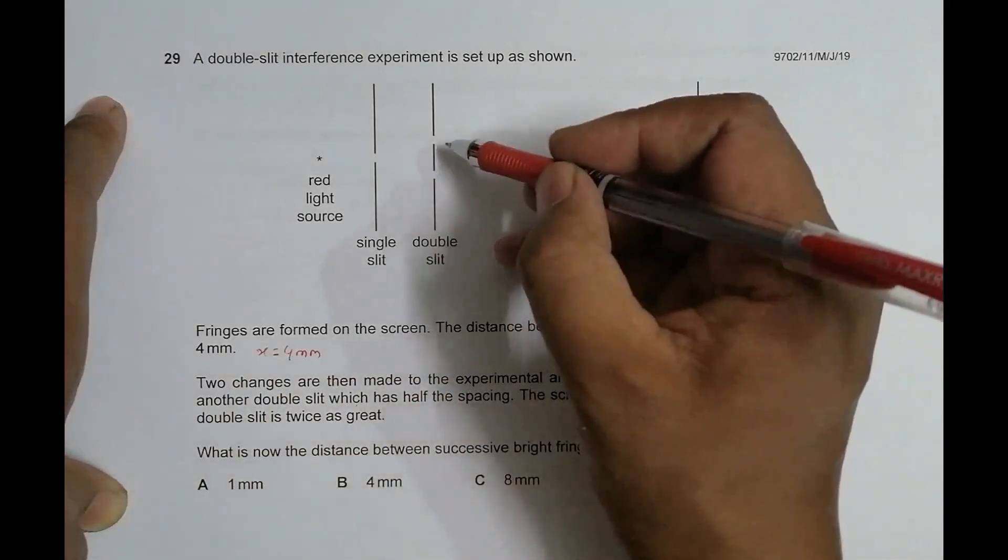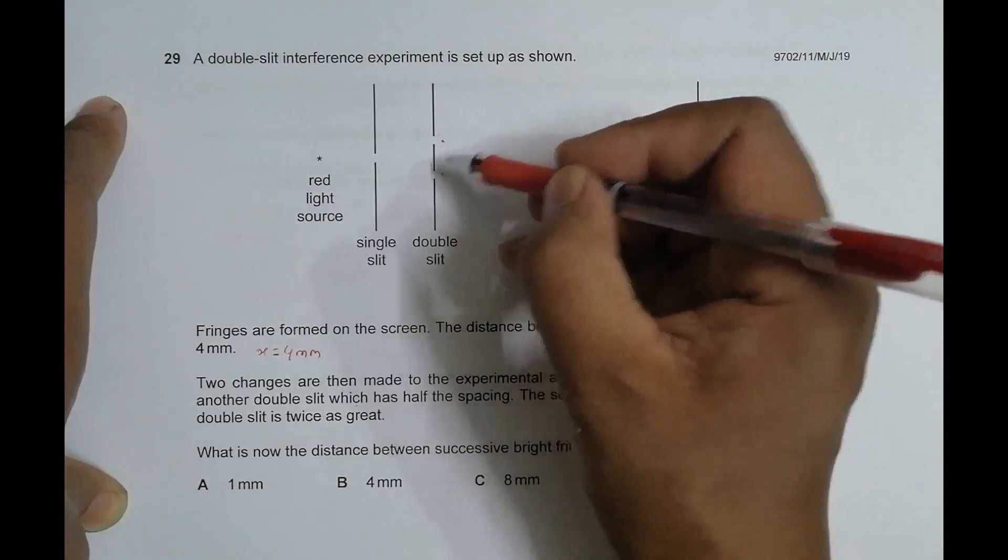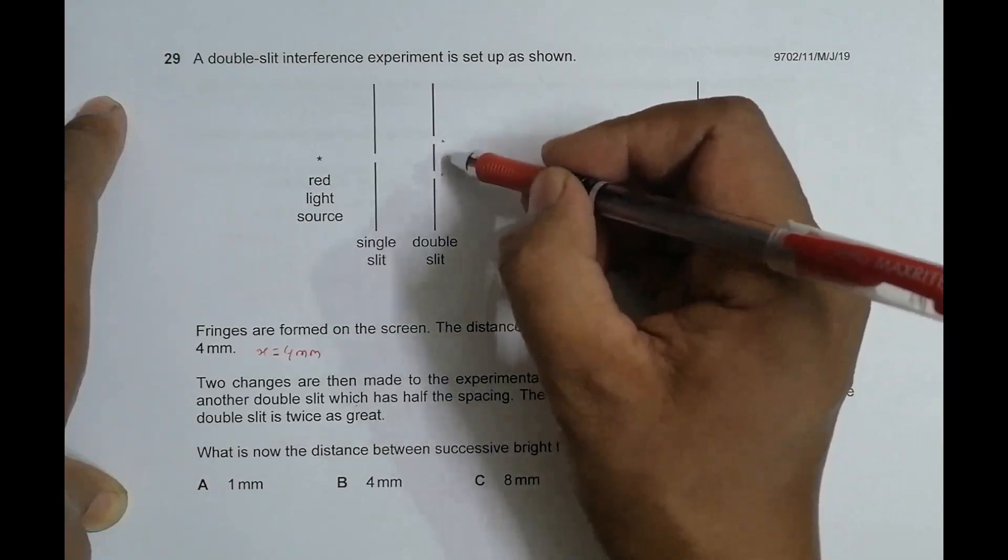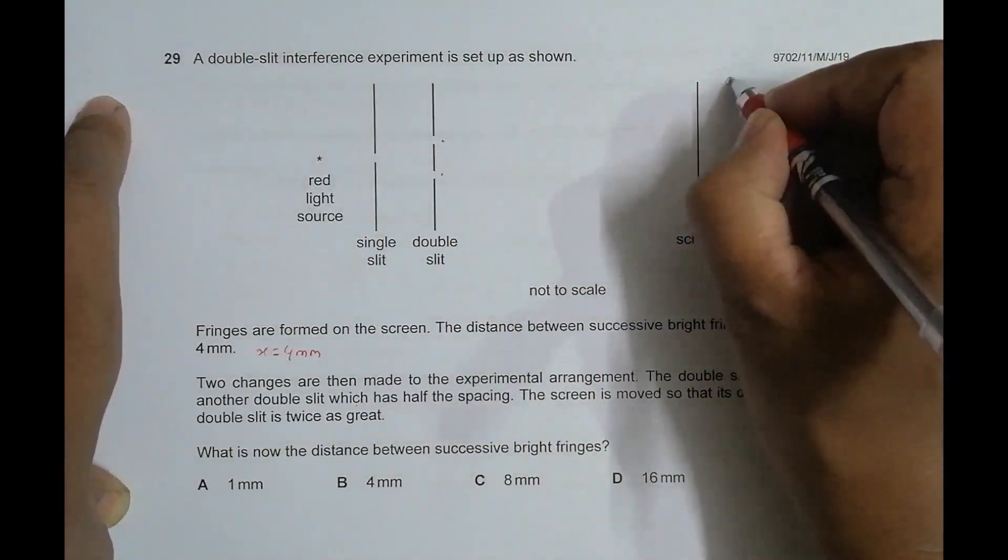The double slit is replaced by another double slit which has half the spacing. So that means that initially these two slits had some distance, now it is replaced by another in which this distance is half.